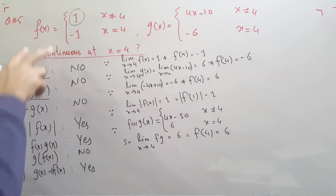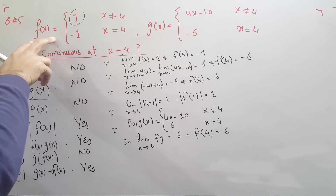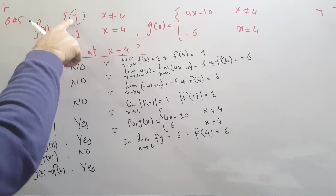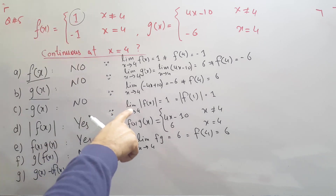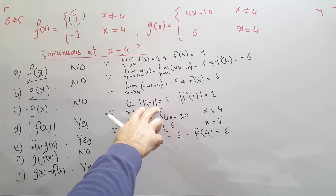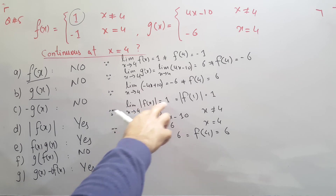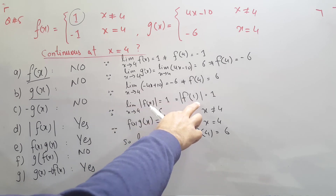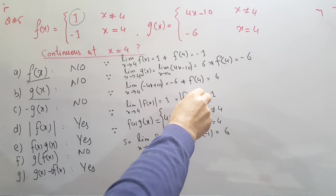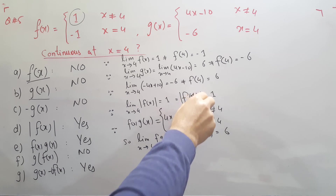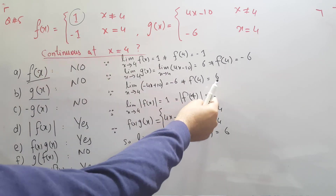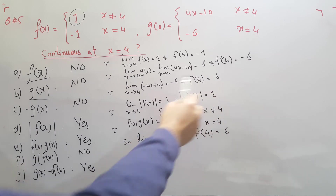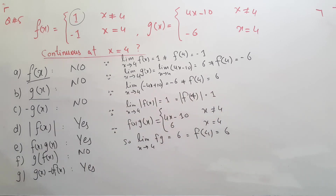Now for the absolute value |f(x)|, both the function and its negative become positive. The limiting value of |f(x)| is 1, and the function value at x = 4 is −1, but taking the absolute value gives 1. Both values are the same, so |f(x)| is continuous at x = 4.